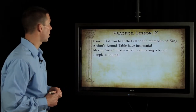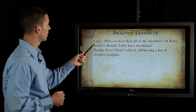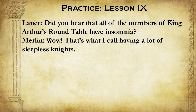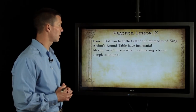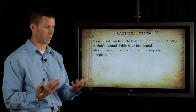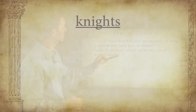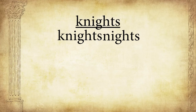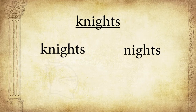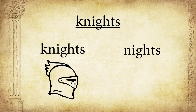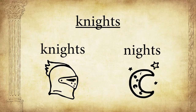Here's another example, a little bit longer — a conversation between Lance, Sir Lancelot, and Merlin. Lance says, "Did you hear that all of the members of King Arthur's Round Table have insomnia?" — meaning they cannot sleep in the evenings. Merlin says, "Wow, that's what I call having a lot of sleepless nights." Look at that and ask yourself: which word is being played upon? It is "knights." Our two definitions are: knights with armor on horses riding off to fight, and "nights" — sleepless nights — unpacking the insomnia quote.